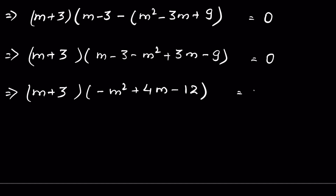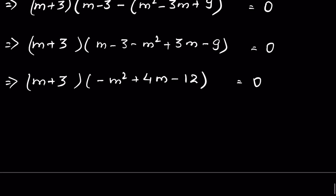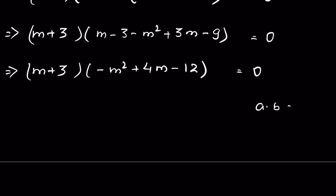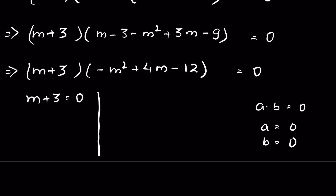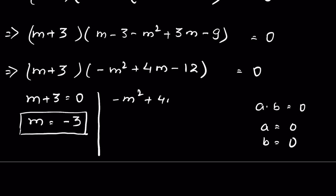When a times b equals 0, either a equals 0 or b equals 0. For the first case, m plus 3 equals 0, giving m equals minus 3. That is one solution for m.